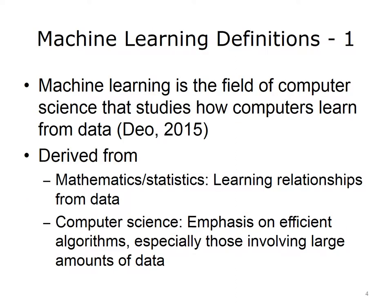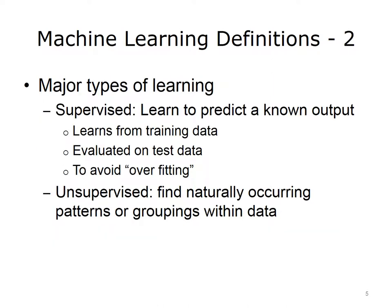There are many definitions of machine learning, but it's commonly described as the field of computer science that studies how computers learn from data. Machine learning is derived from mathematics and statistics, where relationships are learned from data, and from computer science, where there is emphasis on efficient algorithms, especially those involving large amounts of data. When we talk about machine learning, we talk about different types of learning.